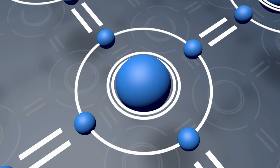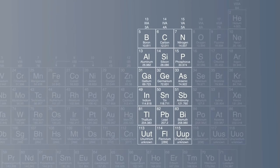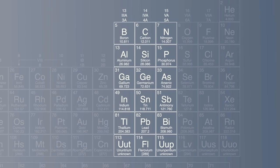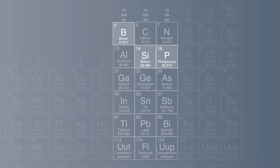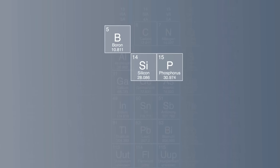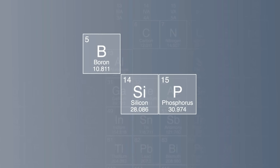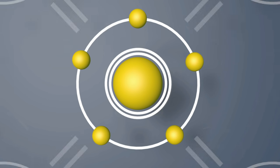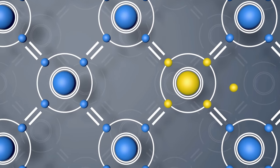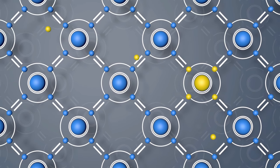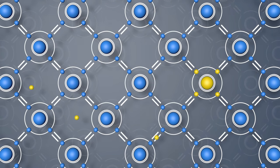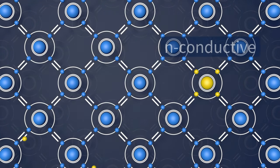These impurity atoms must have a number of outer electrons that is either one more or one less than that of silicon. Silicon is in the fourteenth group of the periodic table of elements. This means that elements in the thirteenth or fifteenth group have to be used in this process referred to as doping. Boron and phosphorous atoms are the most suitable elements in these groups. They are very close to silicon on the periodic table and therefore have very similar properties. Phosphorus has five outer electrons. When it is inserted into the silicon crystal lattice, the fifth phosphorous electron can move freely.